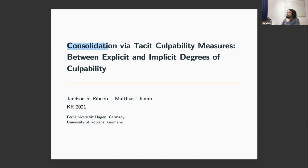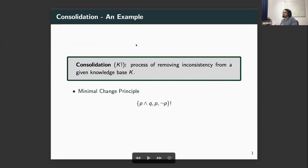I'd like to start the talk with a brief explanation of what consolidation is. Consolidation is basically a process whose purpose is to remove inconsistency in a knowledge base. To illustrate that, I have here a knowledge base that is inconsistent because I have these two formulae, p and not p, which are clearly inconsistent with each other. If I want to consolidate this knowledge base, the simplest approach is to remove these two formulae; I stay with the conjunction p and q.